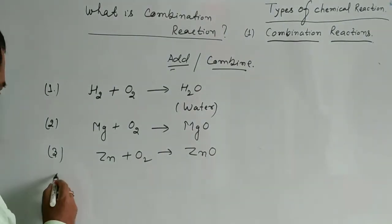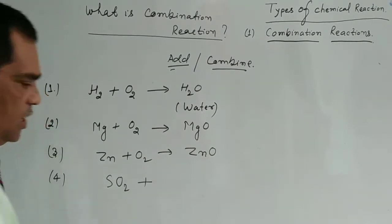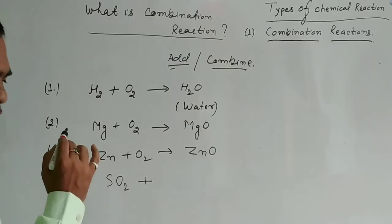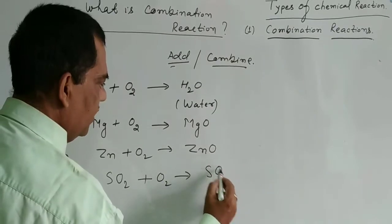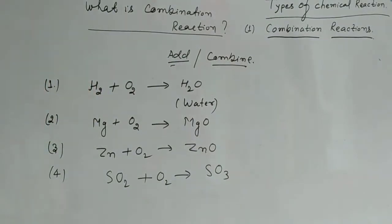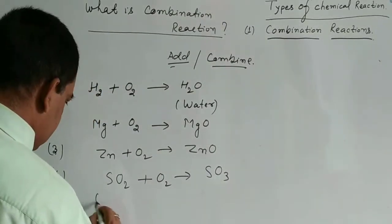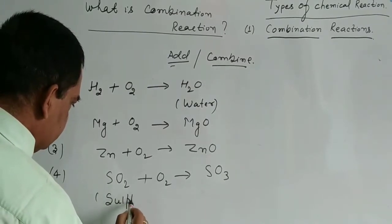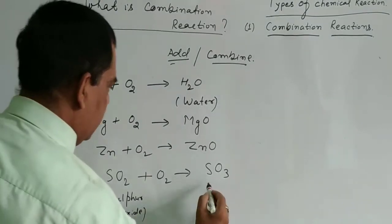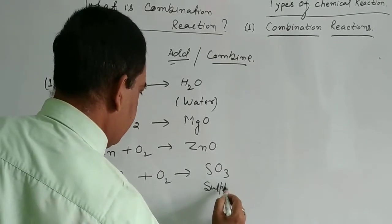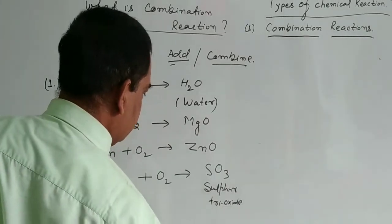Next example: sulfur dioxide gas, when combined with oxygen gas, forms sulfur trioxide SO₃. In chemistry, numeric prefixes are used: 1 means mono, 2 means di, 3 means tri, 4 means tetra, 5 means penta, 6 means hexa, 7 means hepta, 8 means octa, 9 means nona, 10 means deca.